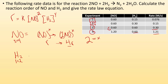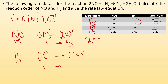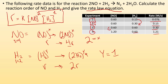Now for H₂, I find where H₂ is different between two trials but NO is the same — trials one and two. In trial one H₂ is 0.15, and in trial two it's 0.30, so we doubled the concentration of H₂. The rate went from 0.076 to 0.15, so we also doubled the rate. If doubling the concentration doubles the rate, the exponent must be one — first order in terms of H₂. So the rate law equation is rate equals K times NO squared times H₂ to the first power. It's second order in terms of NO, first order in terms of H₂, third order overall.